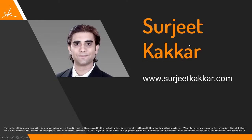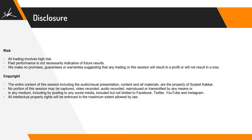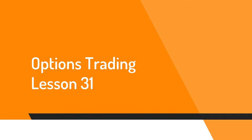Let's get started with today's session. Make sure you go through the disclosure, which talks about representation, risk disclosure, risk involved in the market, and also about the copyrights. We have already covered 30 lessons. Today we are doing lesson number 31, which is Iron Butterfly. Just like we did short strangle, and then we did a modified version called Iron Condor — because in short strangle, we were having unlimited risk — by adding the protective units, we were able to convert that short strangle into an Iron Condor.